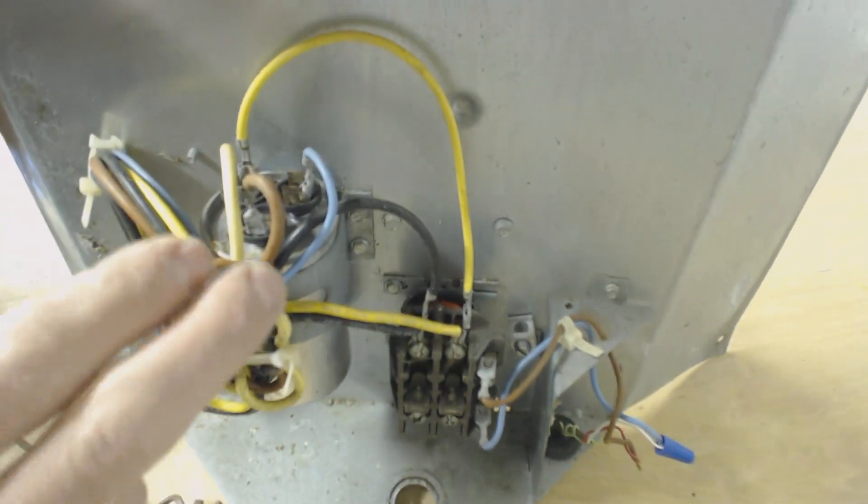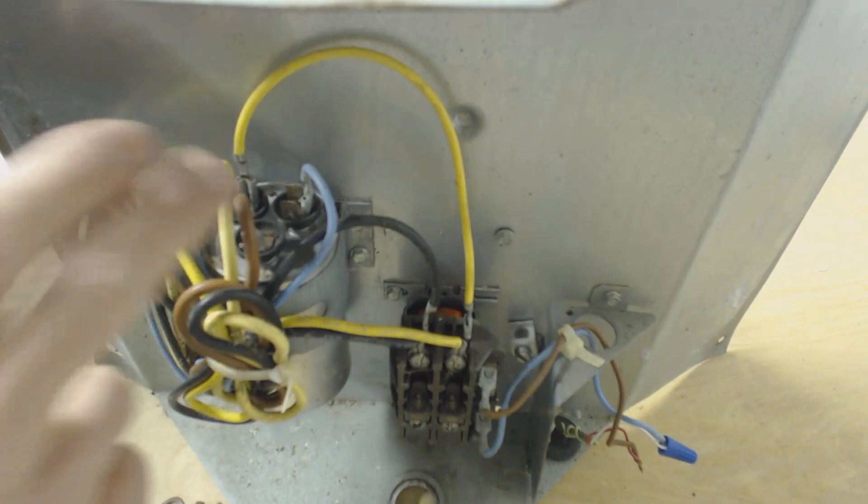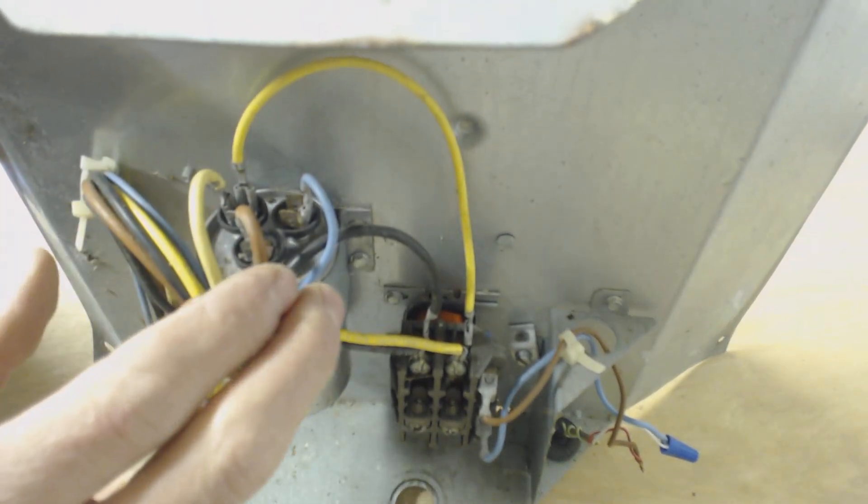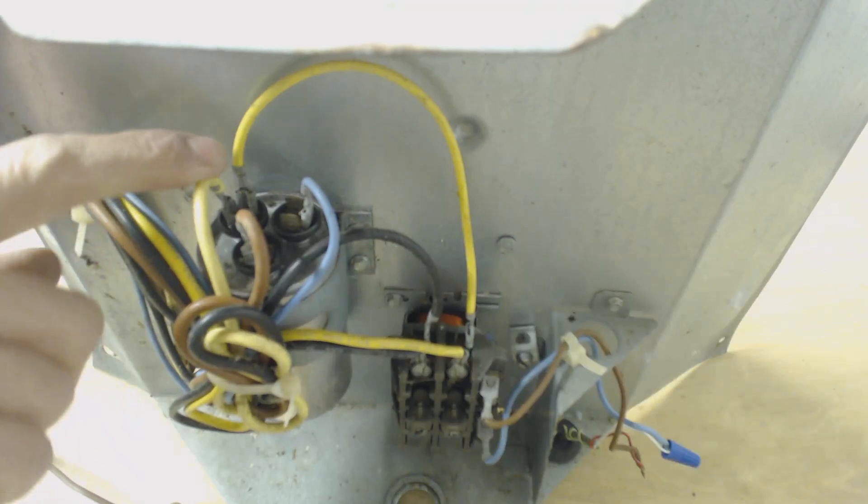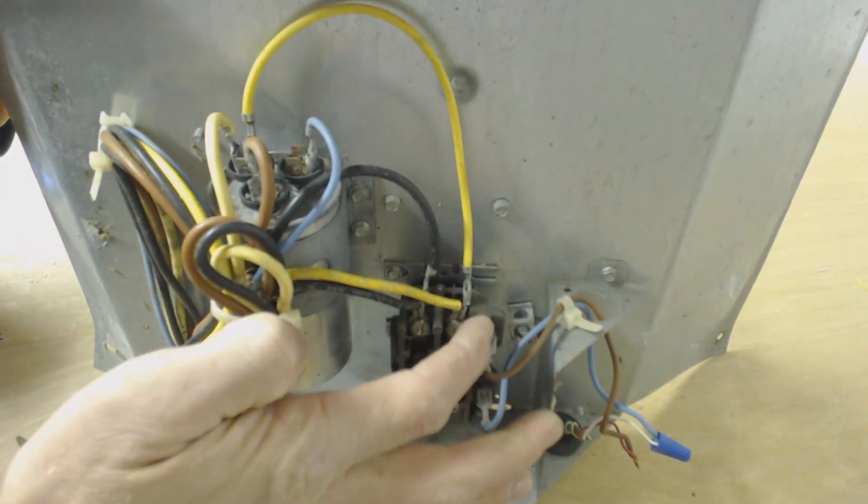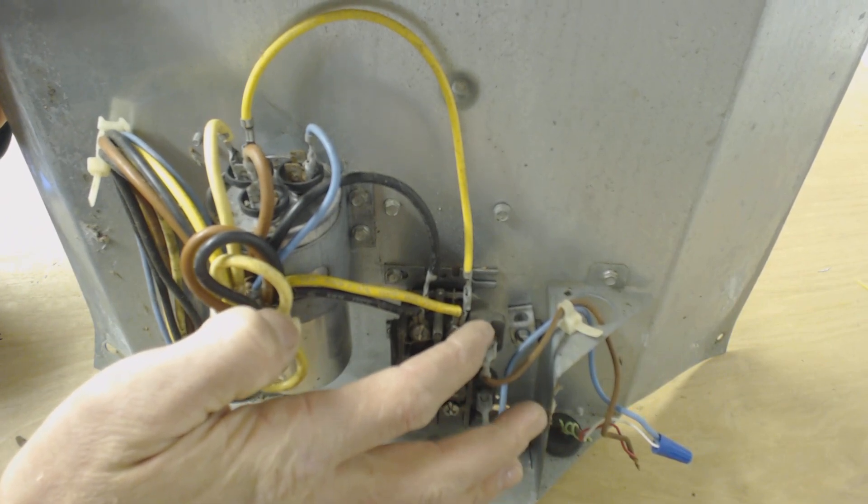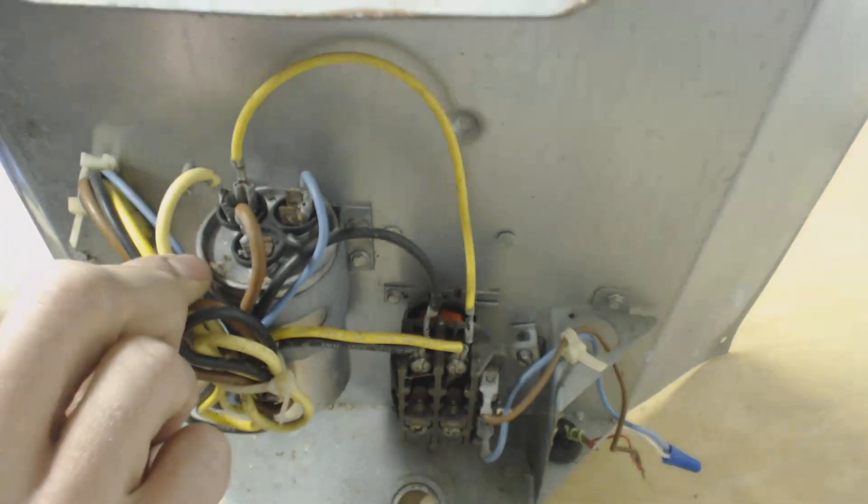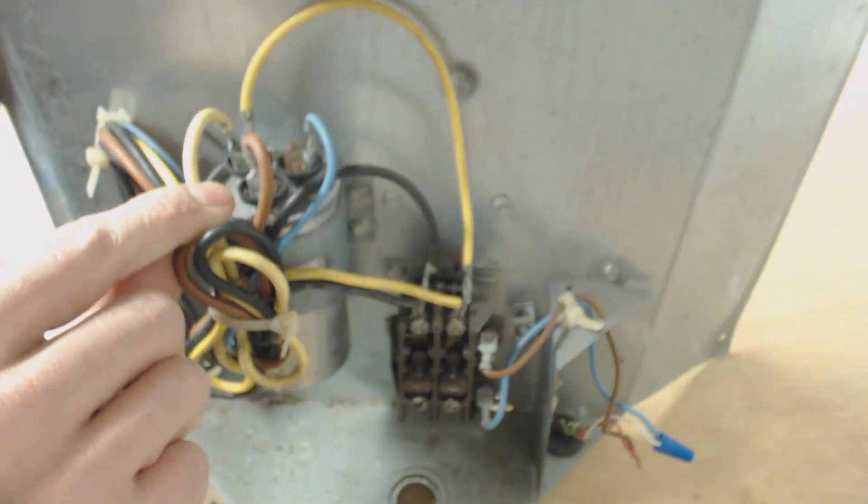So you have your capacitor up here. You have the yellow, where the yellow wire is attached into it, right here. That usually gets powered directly off of the contactor. And then you look at the capacitor where it says C or Herm.